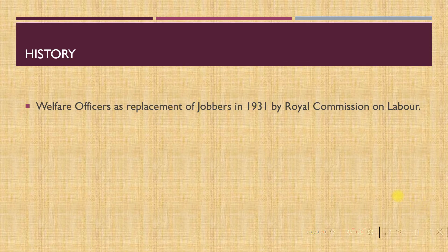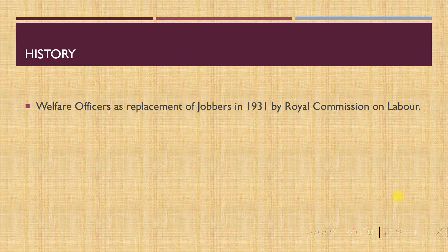This started when welfare officers were made as a replacement of jobbers in 1931 by the Royal Commission on Labour. The Royal Commission on Labour recommended the appointment of labour officers in factories and establishments so that the position of jobbers — personnel who laid off workers in establishments — could be avoided. Before these labour officers, the function was carried out by jobbers who used to simply lay off workers without any rules, conduct, or regulations.